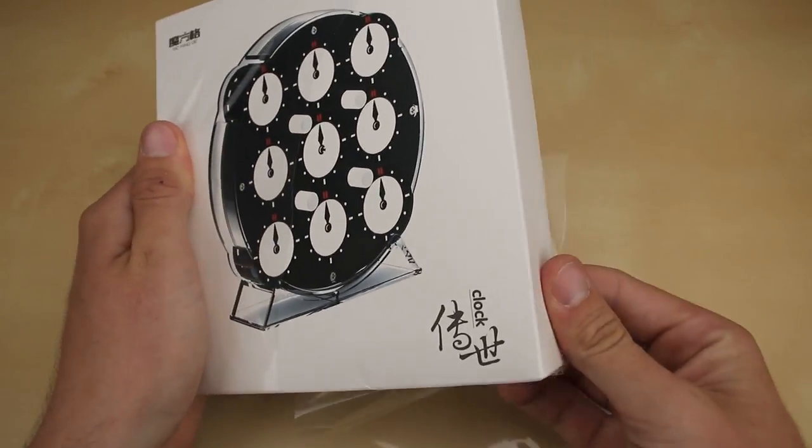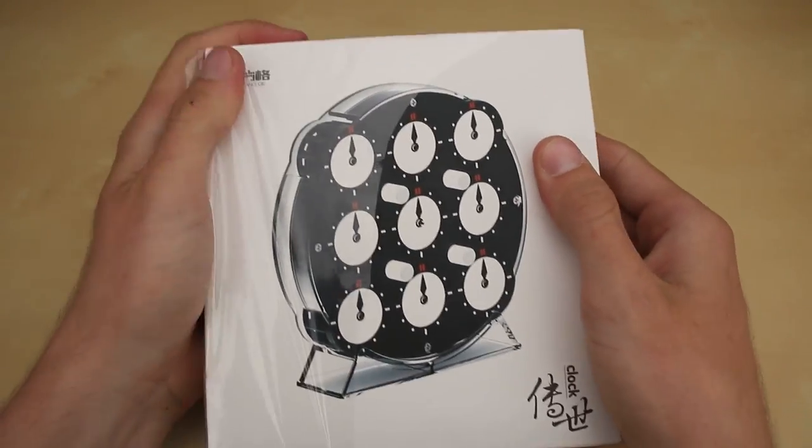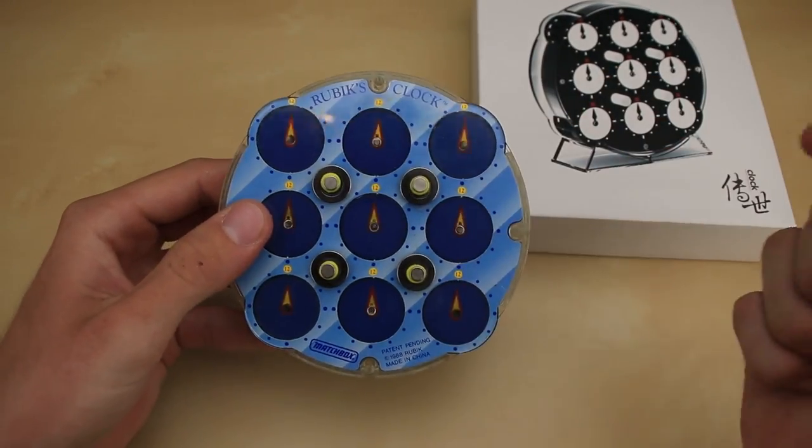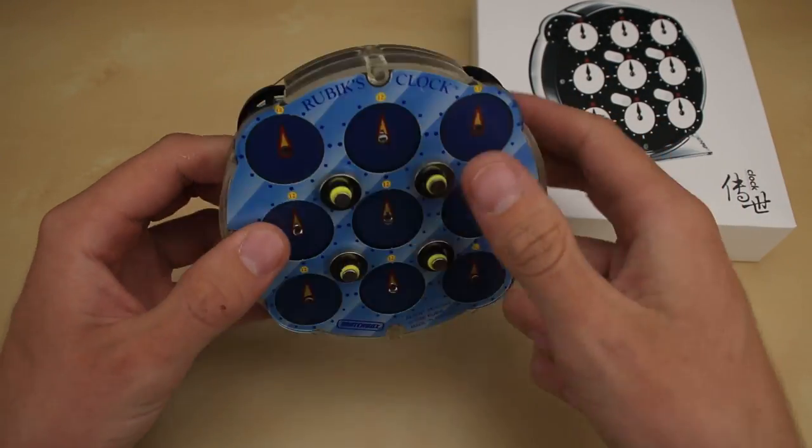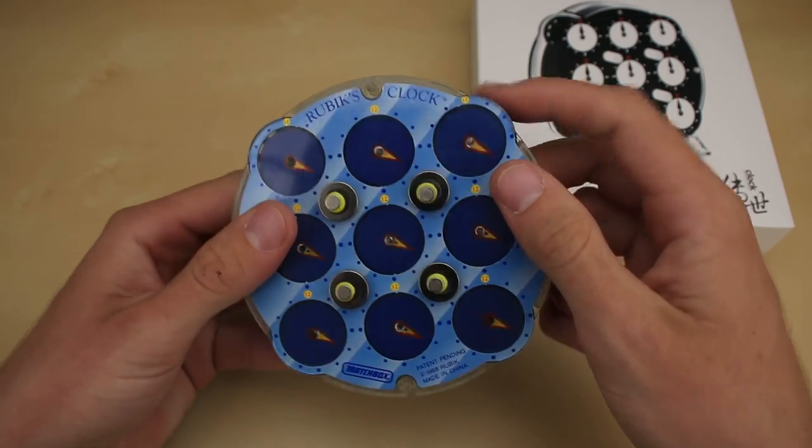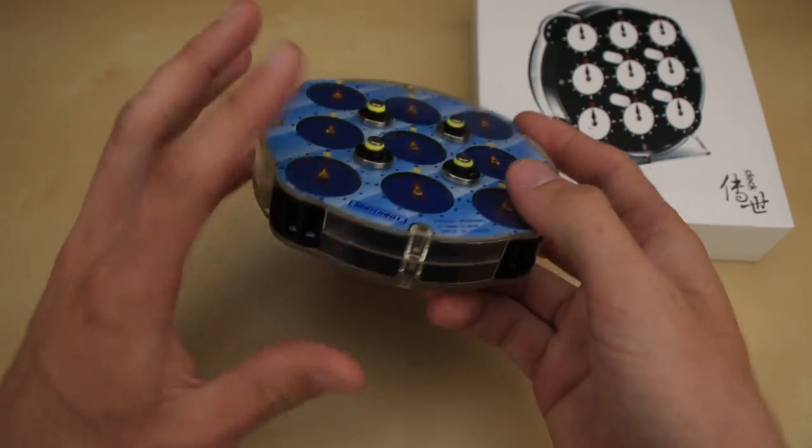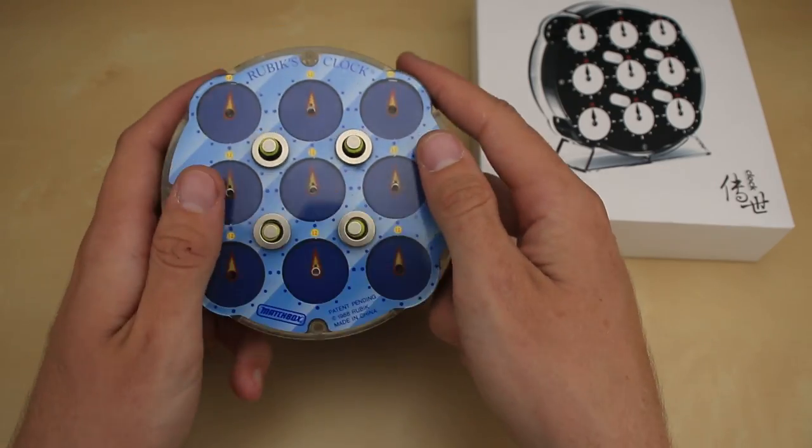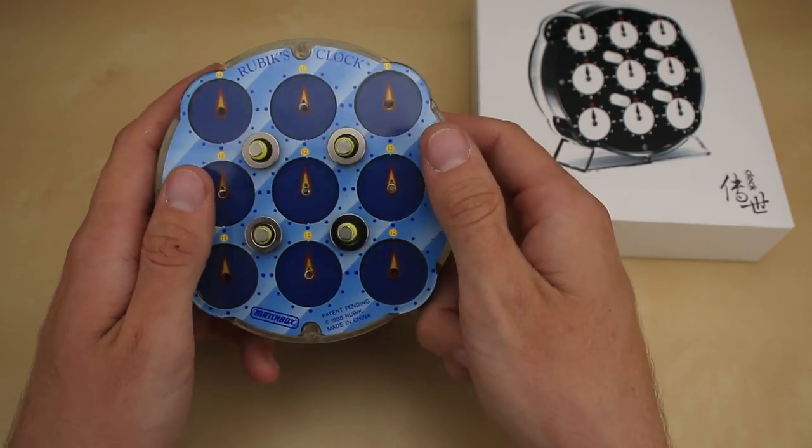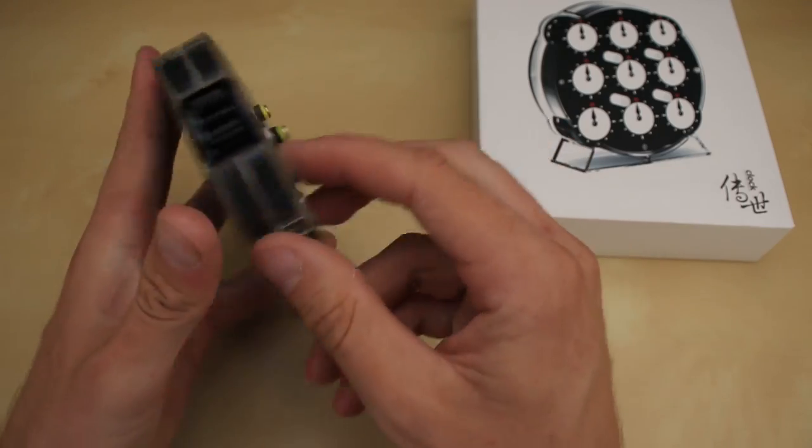So since the Rubik's clock was released in the 80s, there haven't really been a whole lot of different brands that have reproduced the same puzzle. So here's the original Rubik's clock that I have added some magnets to to make it turn a little bit better. And right out of the box, all of these turn terribly. You have to break them in a ton, lubricate them, and in the modern day, put magnets on them. Really just to make it a viable option for speedcubing because this is in the World Cube Association.